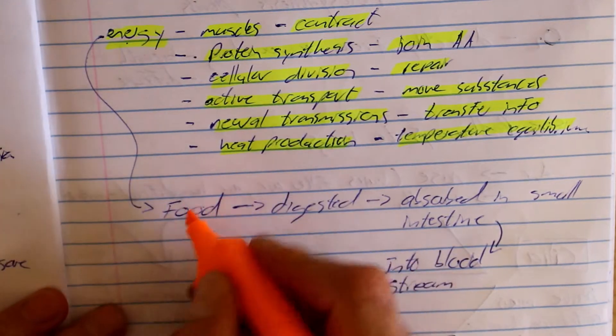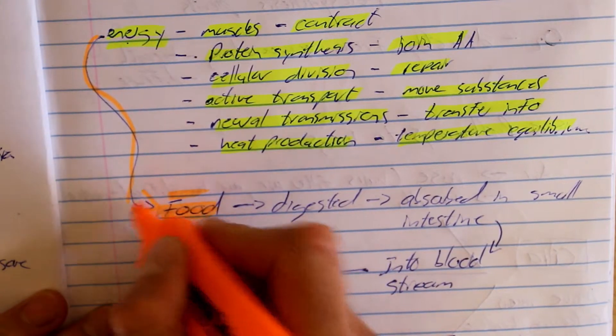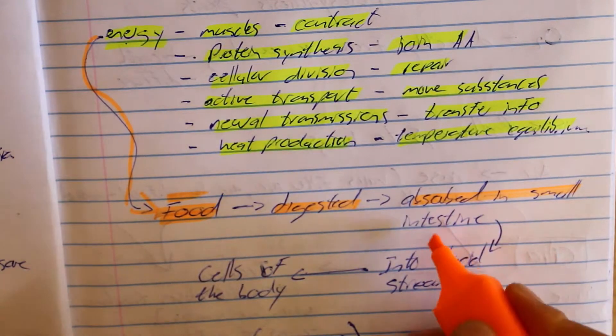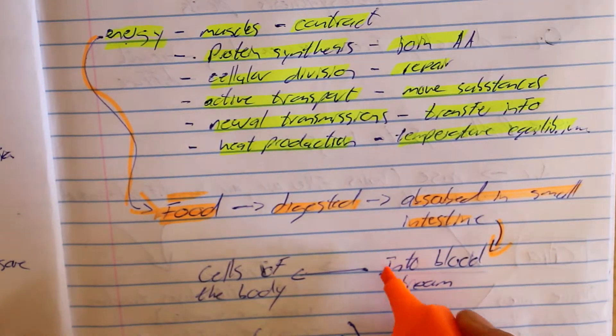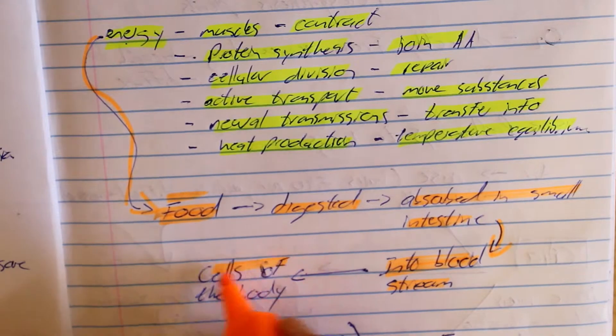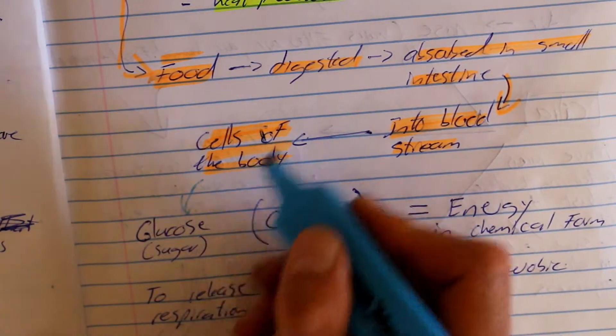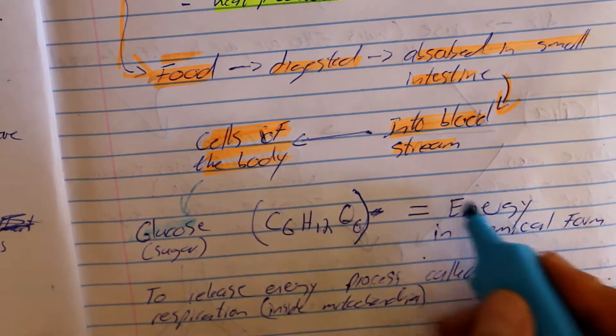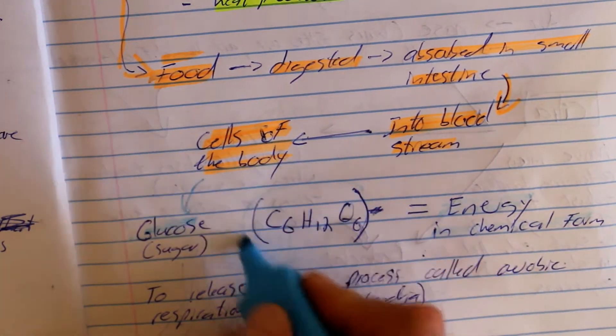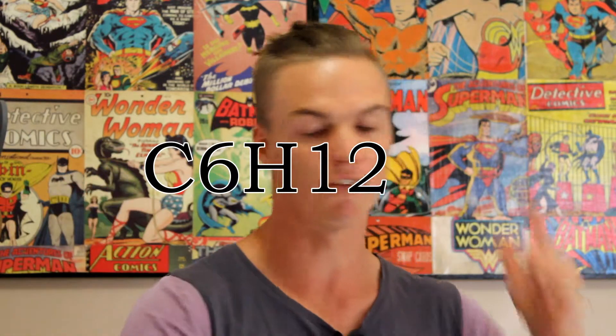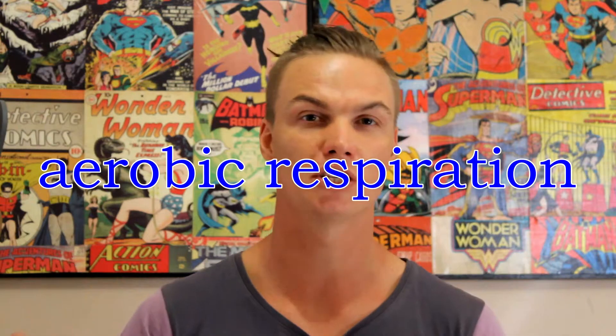This energy comes from food that we eat. Food is digested and absorbed in the small intestine, goes into the bloodstream and to cells of the body. Once glucose is taken up by the cells, it gets used in energy metabolism — this is the chemical form of energy. The most common source of energy is glucose, or C6H12O6, and it is used in both aerobic respiration and anaerobic respiration.